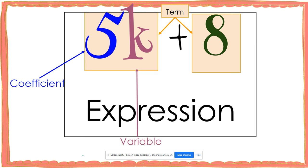Every time you have a variable in your expression, you always have a coefficient as well. If you look at 8, you notice that 8 does not have a variable with it. That means that 8 is always going to have a value of 8. The value of 5k is going to change depending on what the value of k is, but 8 will always stay 8 because there is no variable to change its value. That means 8 has a constant value. Any number in an expression without a variable is considered a constant.